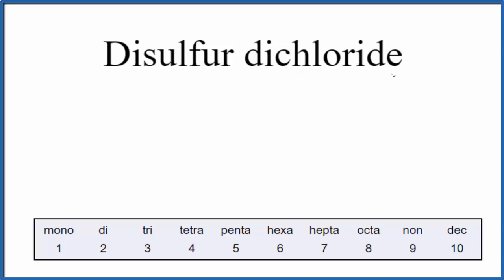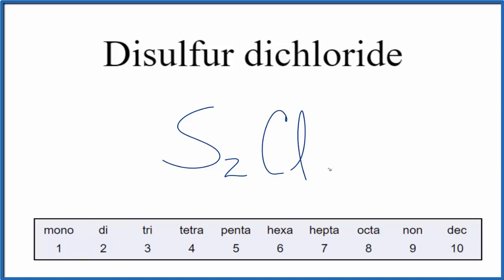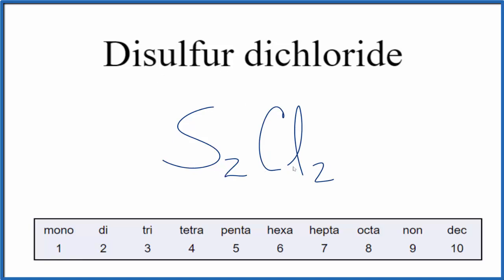To write the formula for disulfur dichloride, we write the element symbol for sulfur, that's just S, and the 'di' tells us we have two sulfur atoms. For the chloride, that's chlorine from the periodic table, so we have Cl. And again, we have 'di', which means two, so we put a two after it. That makes the formula for disulfur dichloride S2Cl2.